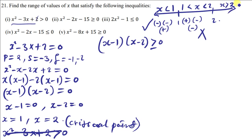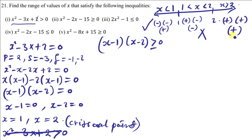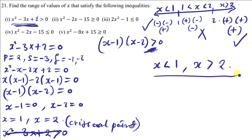We get any number greater than 2 — say 3. 3 minus 1 gives positive 2, and 3 minus 2 also gives positive 2. Positive times positive gives positive — greater than zero, so the answer is yes. The two regions that satisfy this inequality are x less than 1 and x greater than 2.